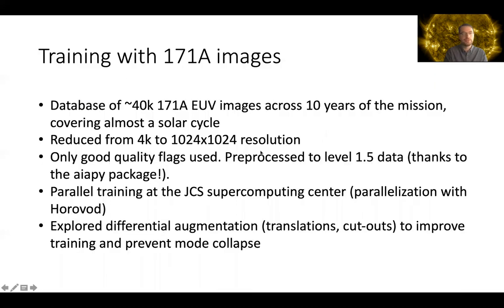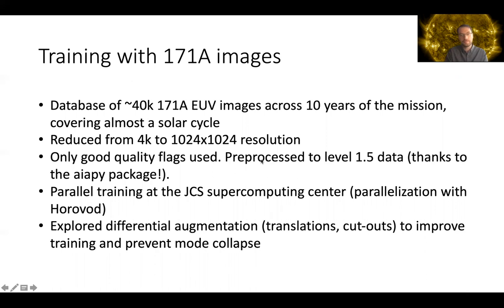The basis for our training was the 171 AIA angstrom images, taken across about 10 years of the mission, covering almost a solar cycle. In these trainings, we reduced them to a moderate resolution of 1,000 square or even less, and of course only used images with a good quality flag, pre-processed to level 1.5. This was made particularly easy with the AIA Python package.